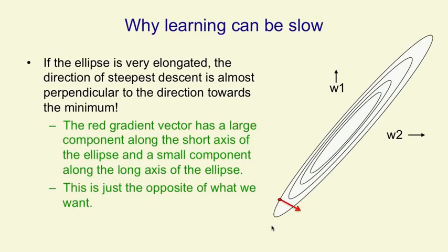If you look at the red arrow in the picture, the gradient is big in the direction in which we don't want to move very far, and it's small in the direction in which we want to move a long way.